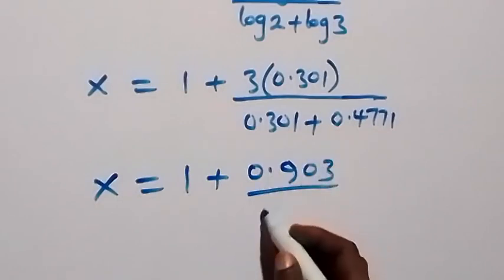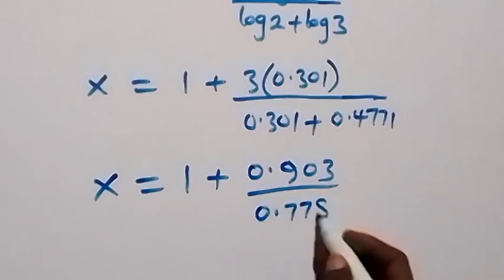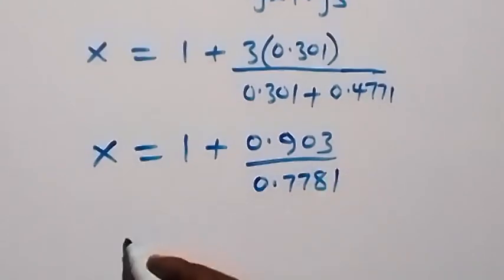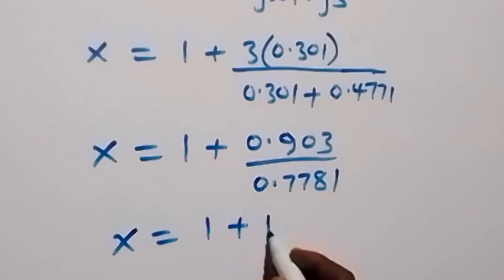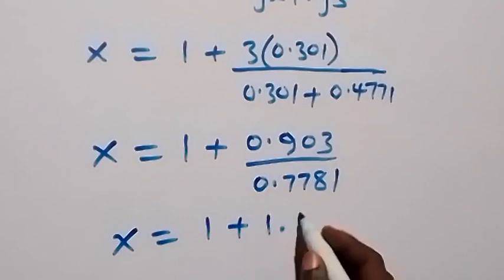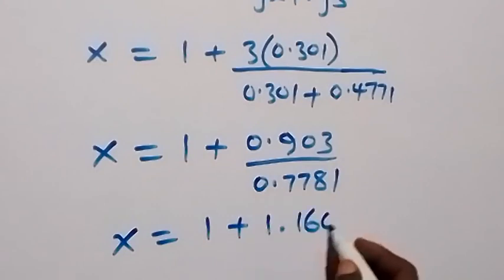Then next we divide this and we have x equals 1 plus 1.1605.